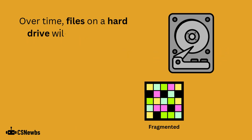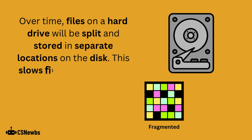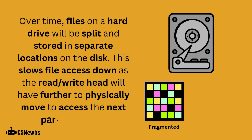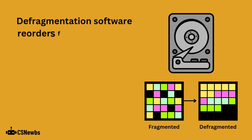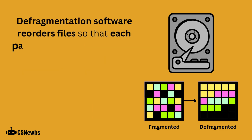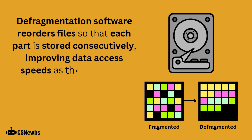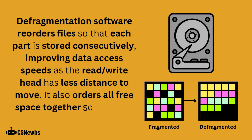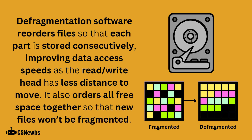Over time, files on a hard drive will be split and stored in separate locations on the disk. This slows file access down as the read-write head will have further to physically move to access the next part of the file. Defragmentation software reorders files so that each part is stored consecutively, improving data access speeds as the read-write head has less distance to move. It also orders all free spaces together so that new files won't be fragmented.